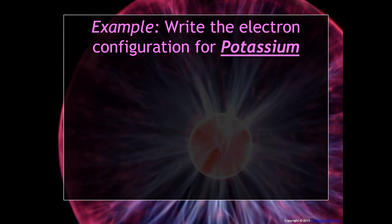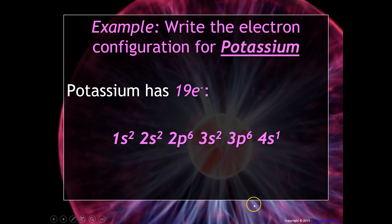So let's use that to write the electron configuration for potassium. Potassium has 19 electrons. So we go from 1s to 2s to 2p to 3s, and then 3p.